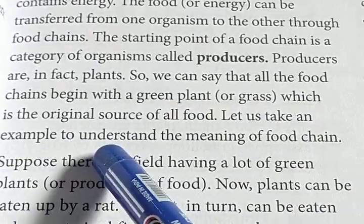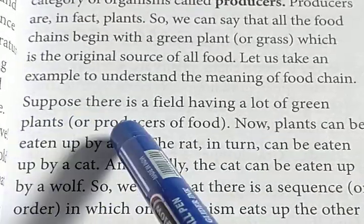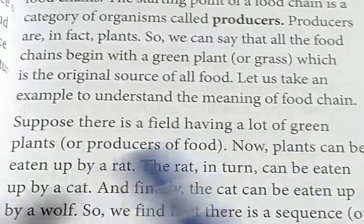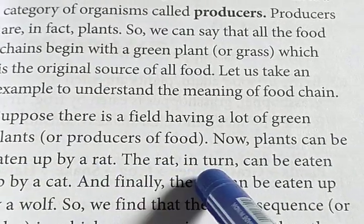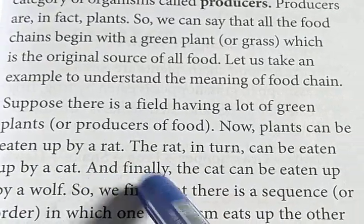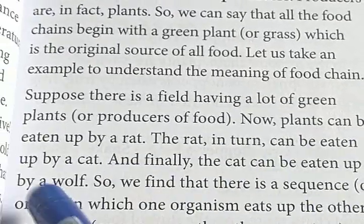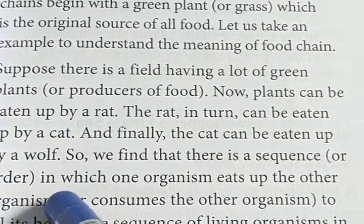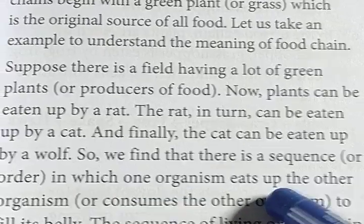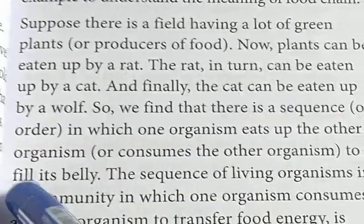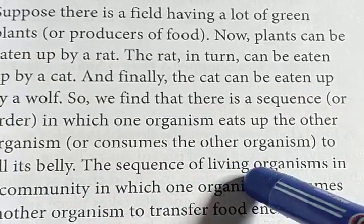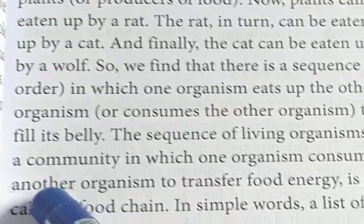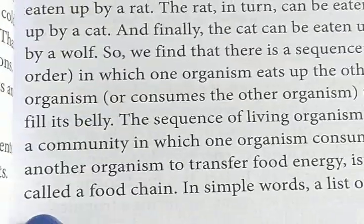Let us take an example to understand the meaning of food chain. Suppose there is a field having a lot of green plants. The plant can be eaten up by a rat. The rat in turn can be eaten up by a cat. And finally the cat can be eaten up by a wolf. So we find a sequence — an order in which one organism eats up another to fill its belly. This sequence of living organisms in a community in which one organism consumes another to transfer food energy is called a food chain.